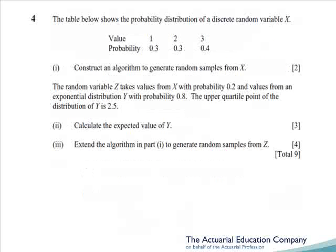Question 4. Test Monte Carlo simulation. Part 1 is just a bog standard inverse transform method for a discrete random variable. Part 2 should look familiar, because it's question 2 from the April paper. We're told the upper quartile of an exponential distribution is 2.5, and we want to calculate its mean.